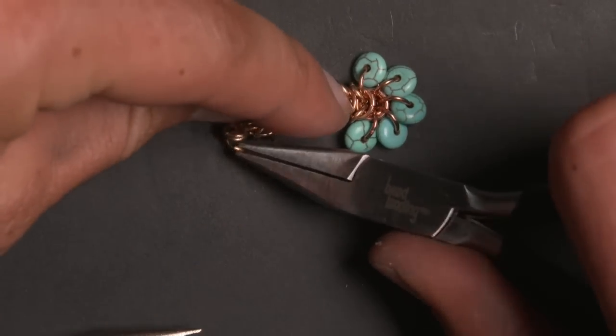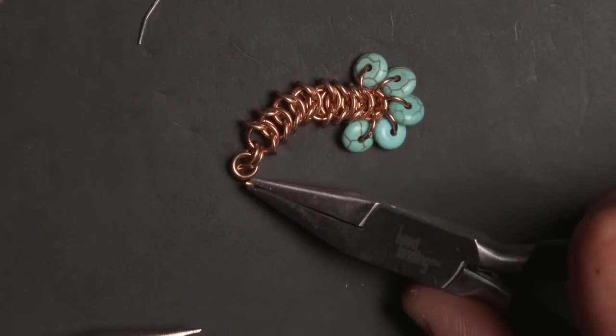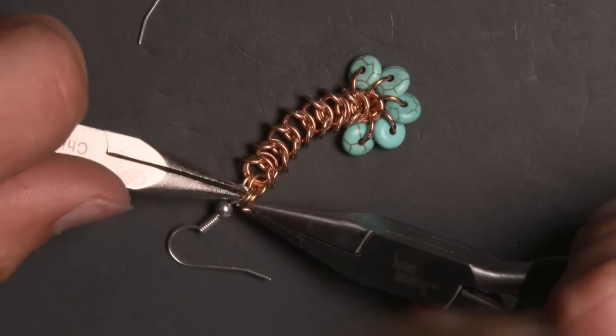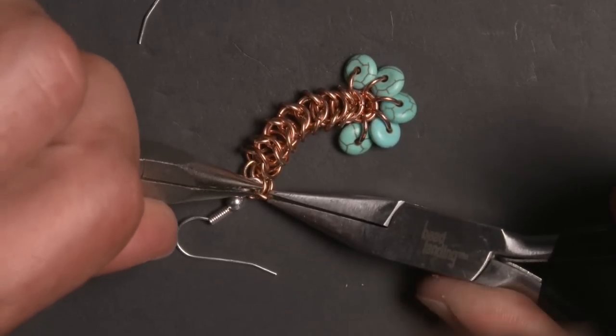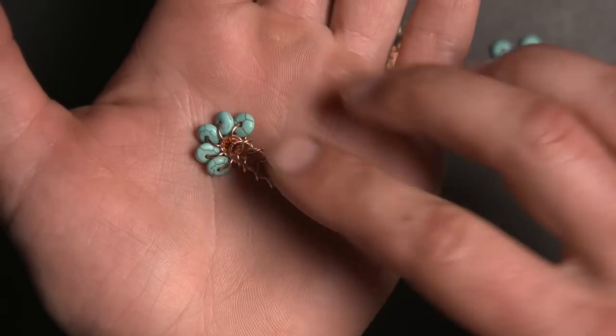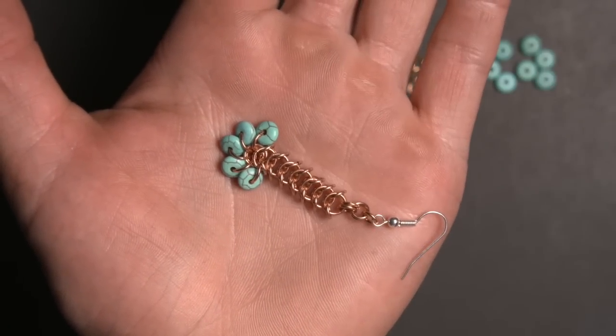The last thing we're going to do to finish up this earring is to use a small ring to connect the earring hook to the two-two chain. So that's one earring finished and now we're just going to follow all those steps one more time to create a second to match.